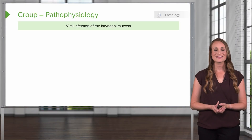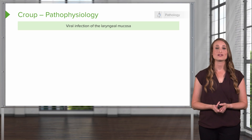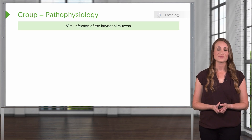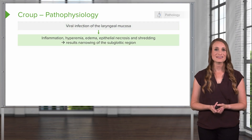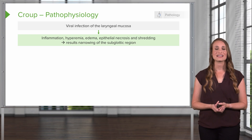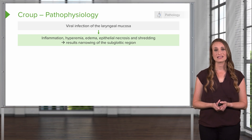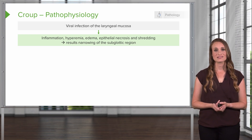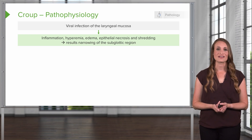First, the infection, which is usually viral, will infect the laryngeal mucosa. Then inflammation, hyperemia, edema, and epithelial necrosis and shedding begin due to the irritation from the virus, and this is going to start the narrowing of the subglottic region.